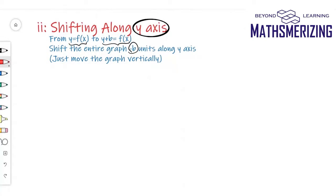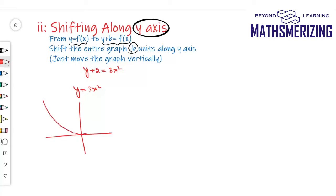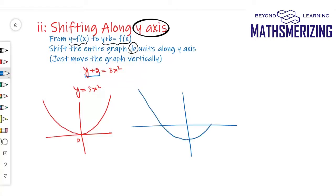Suppose I want to draw the graph of y + 2 equals 3x². The basic graph is y equals 3x², which is a parabola opening upwards with vertex at the origin. For y + 2, I'll shift the entire graph minus 2 units along the y-axis. Previously the vertex was at the origin; now this vertex has shifted to (0, −2).